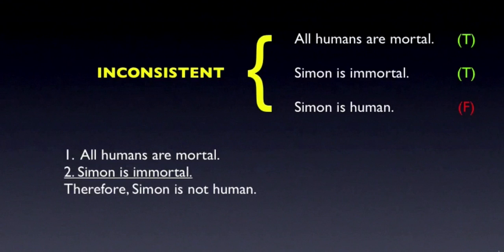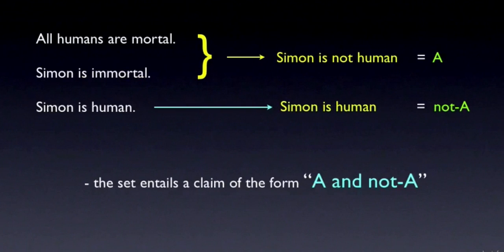Here's another way to represent this. The first two claims entail a claim that is the contradictory of the third claim. And from this, it becomes evident that to assert that all the claims in the set are true is to assert a formal contradiction.